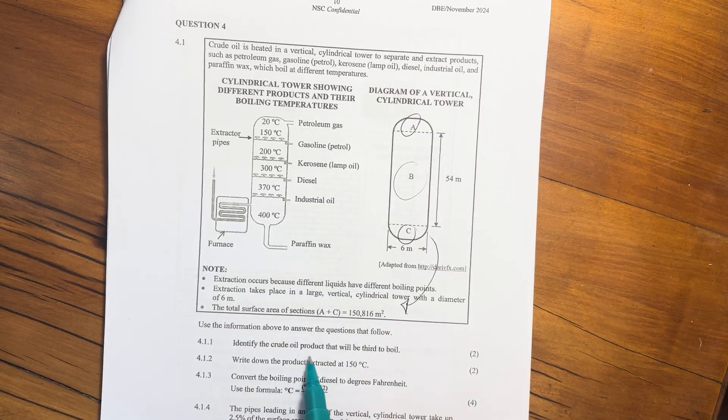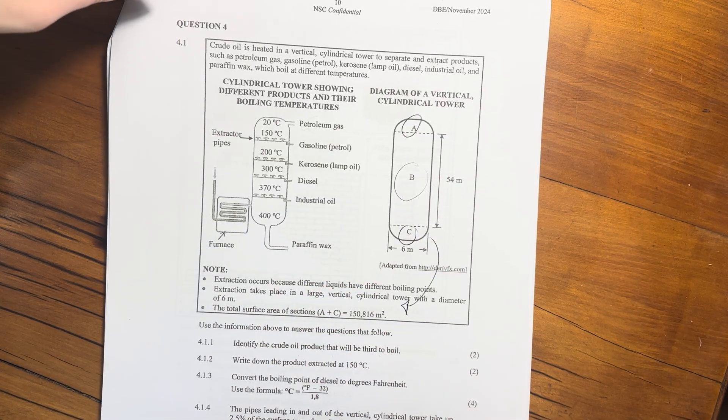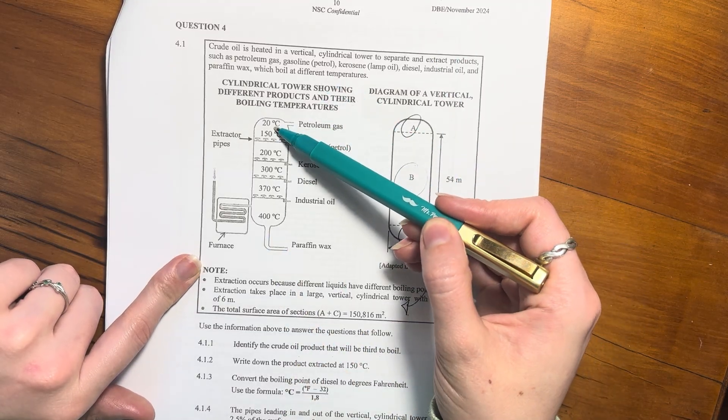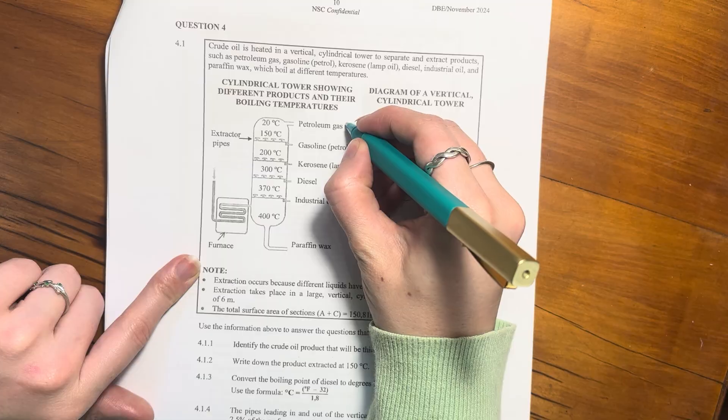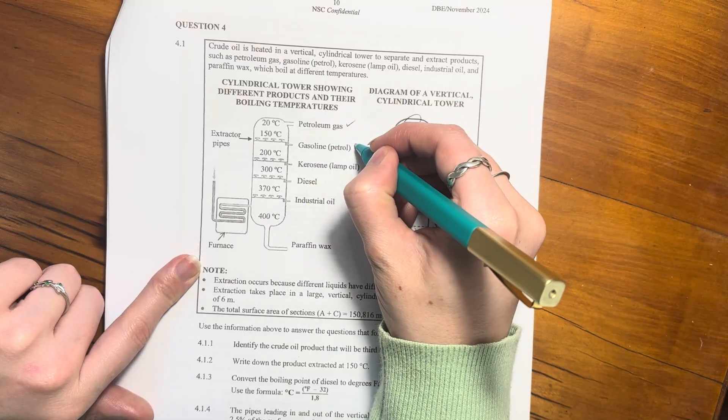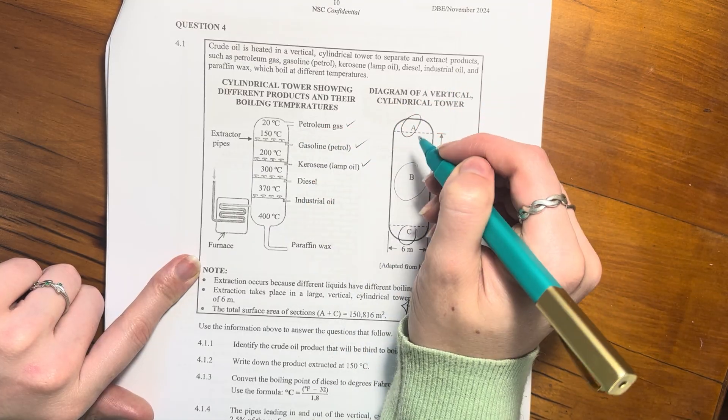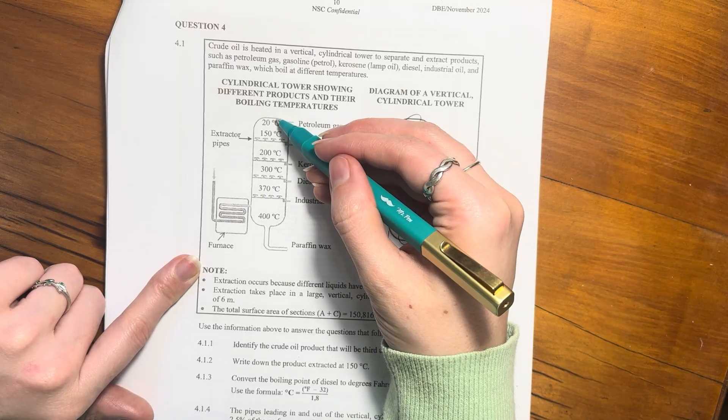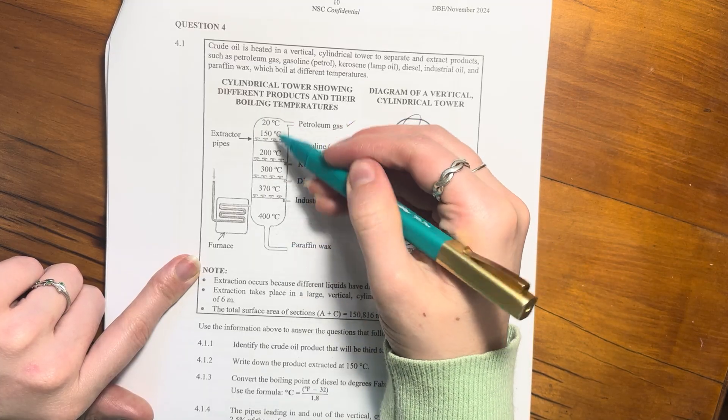Identify the crude oil product that will be third to boil. Remember with boiling, the lowest one is boiling first. So petroleum gas will be first, then gasoline, then kerosene. The one that will be last is paraffin wax. So you're going to be working this way and not the other way around.